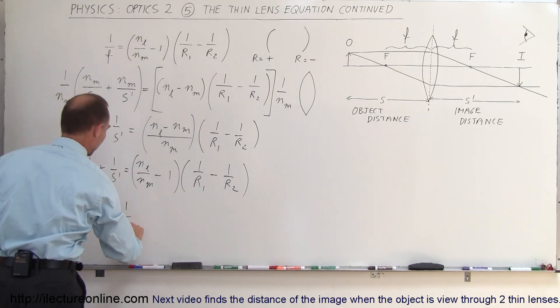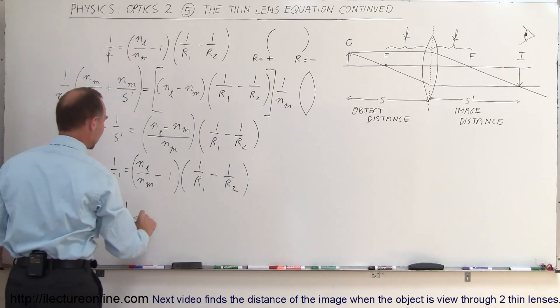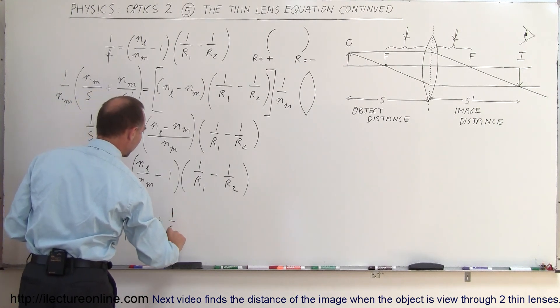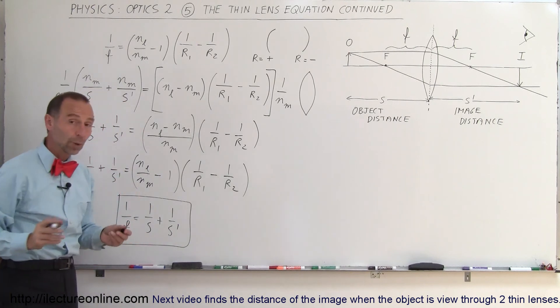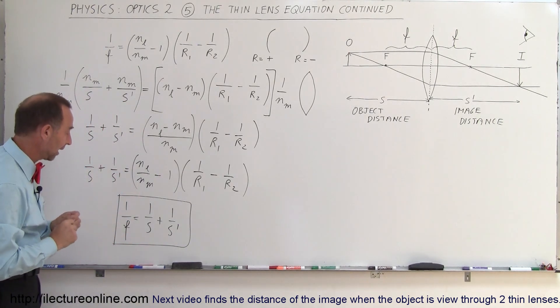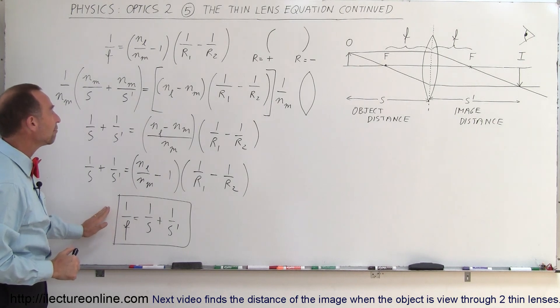In other words, 1 over the focal length of a thin lens equals 1 over the object distance plus 1 over the image distance. This is another form of the thin lens equation that you're probably familiar with if you've had optics before. This is where this equation came from.